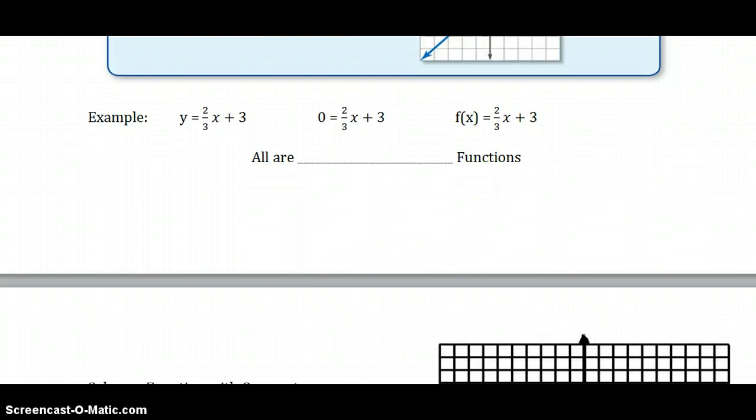Here are some examples. We have y equals 2/3x plus 3, 0 equals 2/3x plus 3, f(x) equals 2/3x plus 3. So 2/3x plus 3 stayed the same. The only thing that changed was the initial y equals, or 0 equals, or f(x). All of these are what we call related functions.